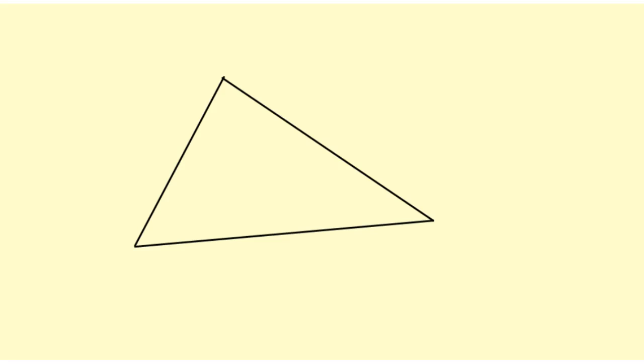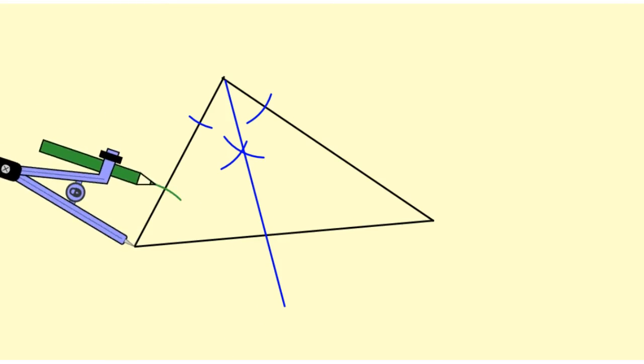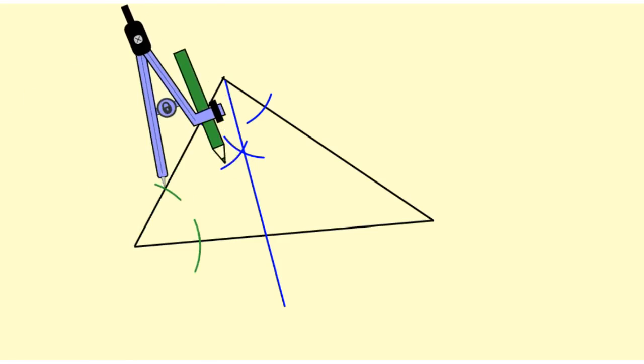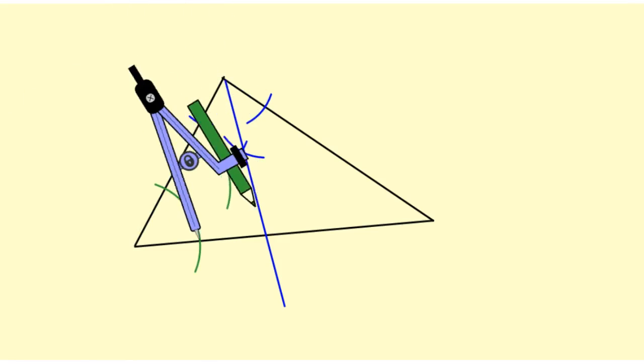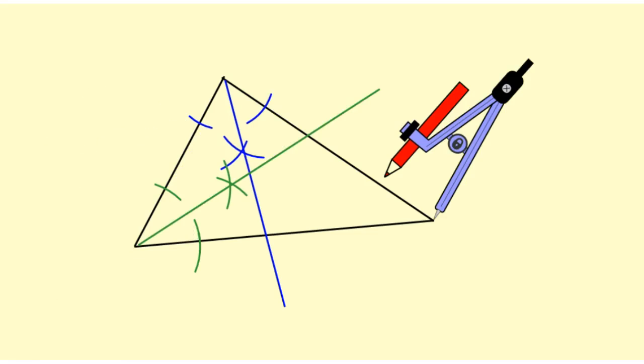If you need a review on how to construct the bisector of an angle, please watch an earlier posted video. I want to insert a comment here because notice that after just constructing two angle bisectors, I actually have the point of intersection.